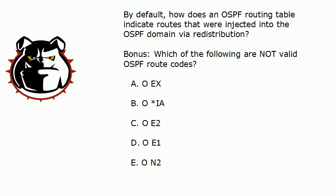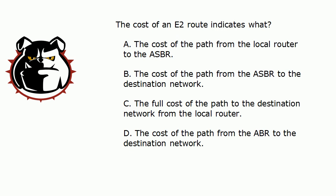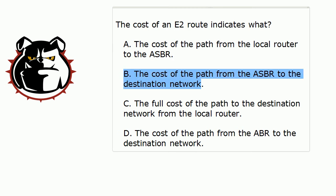Let's go back to the first question: What does the cost of an E2 route indicate? This is an interesting concept. With an E2 route, the cost indicates the cost of the path from the ASBR to the destination network. When you see an E2 route and its cost, that does not indicate the cost of the path from the local router all the way to the destination — it's from the ASBR to that destination network.